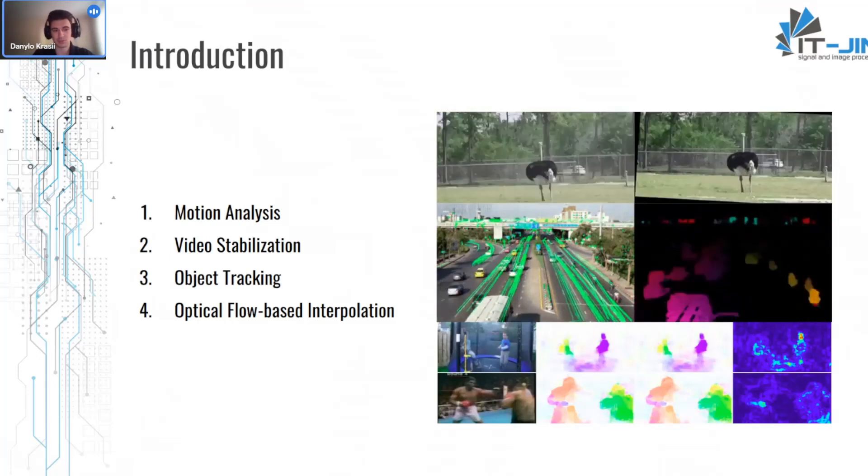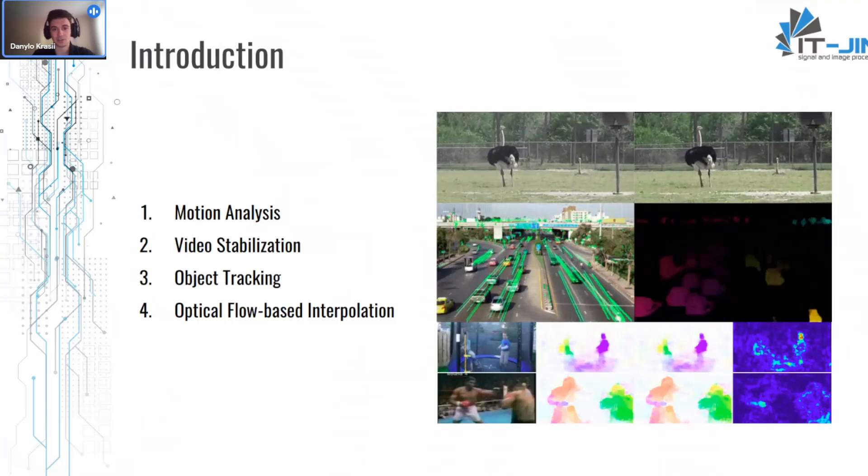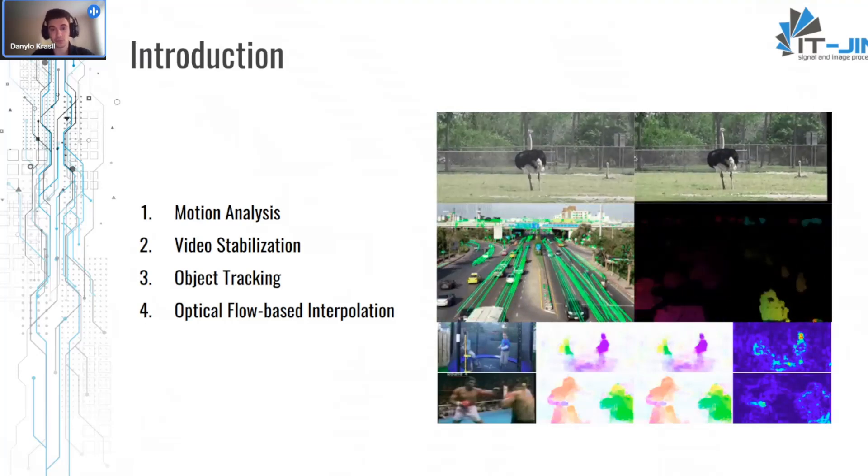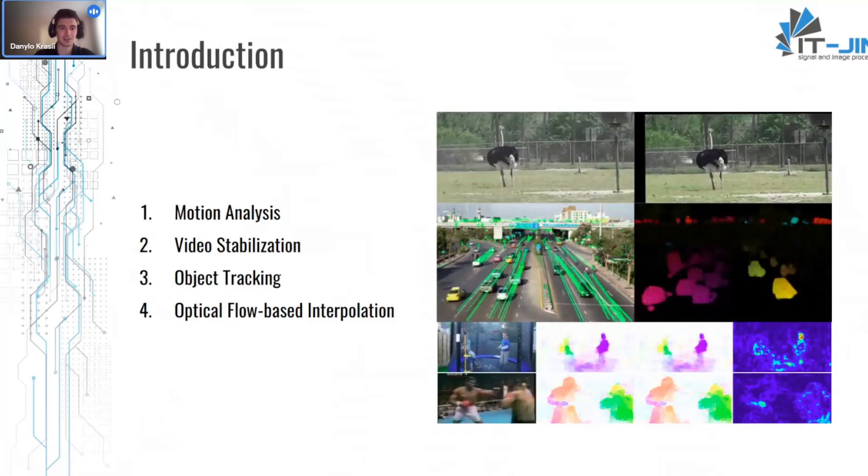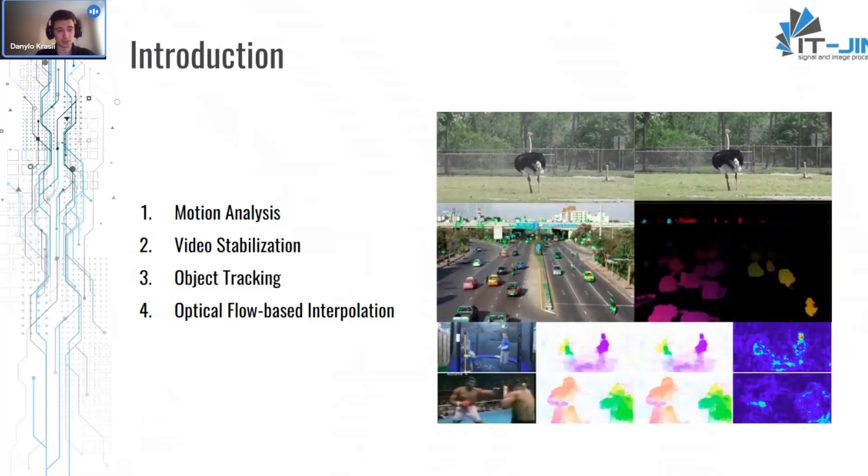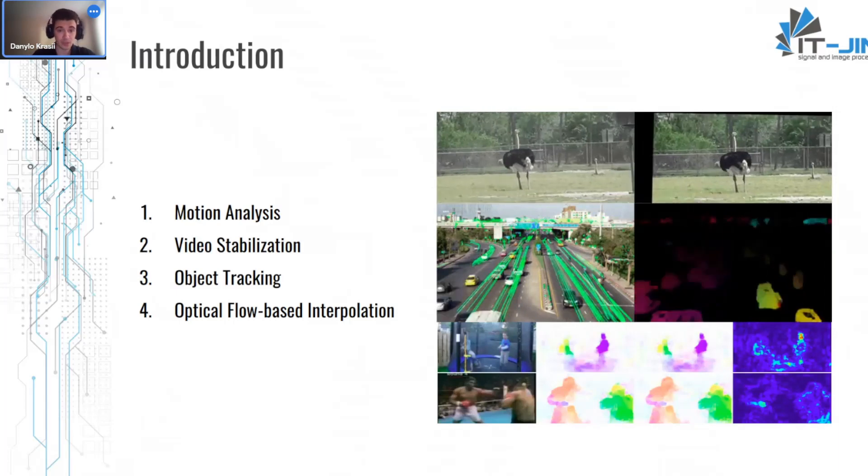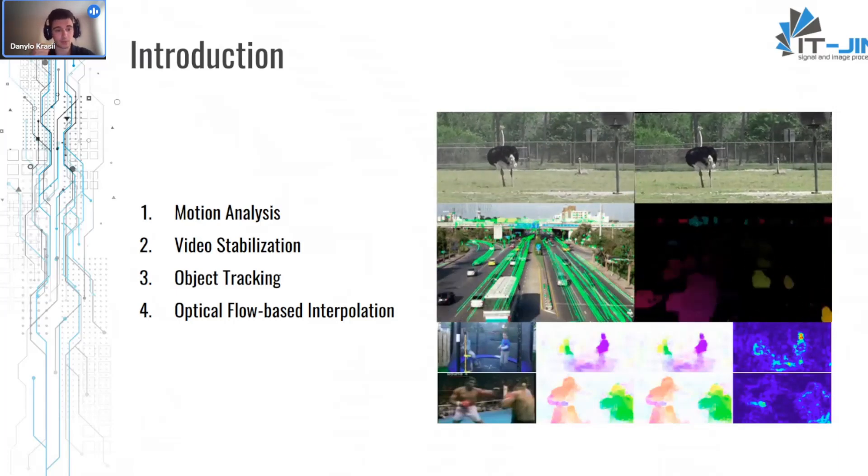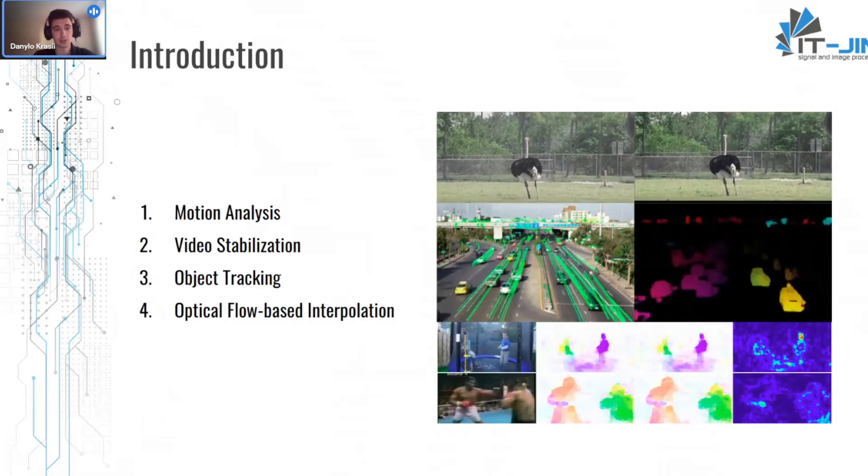Optical flow estimation is without doubt highly useful in the field of computer vision. It is used in many tasks like motion analysis of objects in the video to understand their movements, patterns, directions, accelerations and so on.